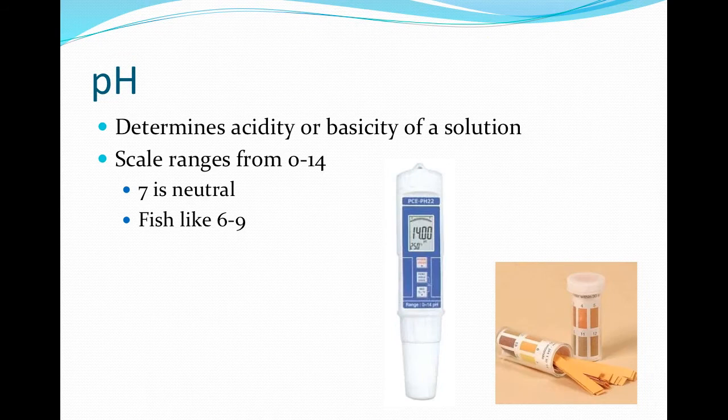pH is a measure of water acidity or alkalinity using the concentration of hydrogen ions. The preferred range of pH for healthy aquatic systems is 6.5 to 8, but some organisms can survive in a pH as low as 4.5 or as high as 10. There are many causes of increased acidity. The two most common in the eastern United States are acid mine drainage and acid rain.